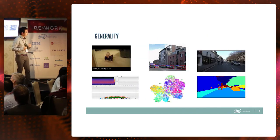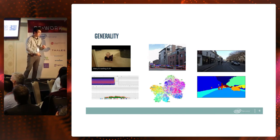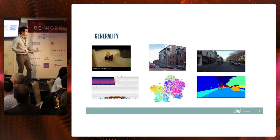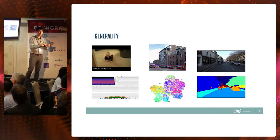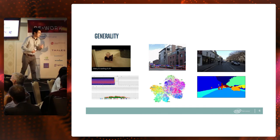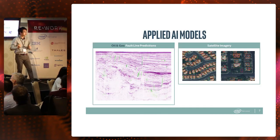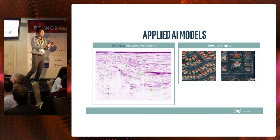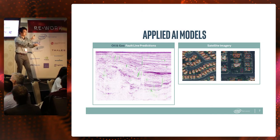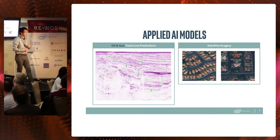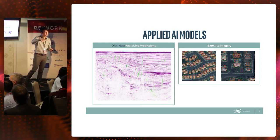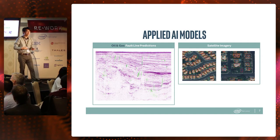For oil and gas, we built computer vision algorithms to predict the location of fault lines — shown here in green — from seismic reflection data shown here in purple. For some federal customers, we've built algorithms to detect buildings and other objects of interest in satellite imagery. In agriculture, we built computer vision algorithms that run on the edge on robots to detect contact points between the corn stalk and the ground. And in underwater robotics, we built algorithms to detect and classify corrosion levels in underwater pipelines — automated infrastructure inspection.